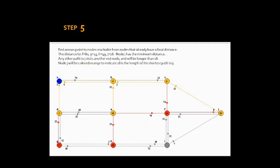Step 5: Red arrows point to nodes reachable from nodes that already have a final distance. The distance to F is 80, G is equal to 23, H is equal to 49, and J is equal to 18. Node J has the minimum distance. Any other path visiting another red node will be longer than 18. Node J will be colored orange to indicate that 18 is the length of the shortest path to J.